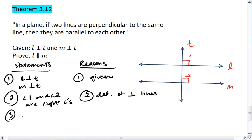I then know that angle 1 is congruent to angle 2. This is because right angles are congruent, which is a theorem that we proved earlier.